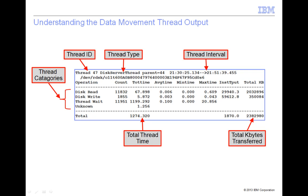This example highlights the various parts of the individual thread output. The thread ID is the identifying number given to the thread by the TSM server. It is often useful to match this ID to the session number or the process number of a particular TSM data movement operation. This can be done with the TSM show threads or show sessions commands. The thread type indicates the TSM server operation that is being performed by this thread.